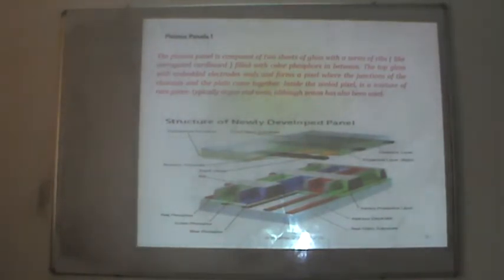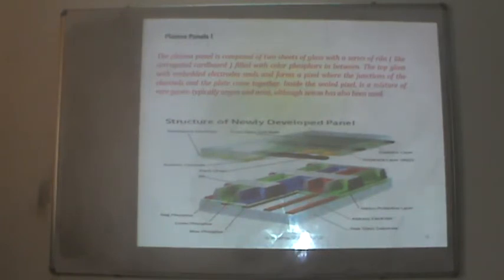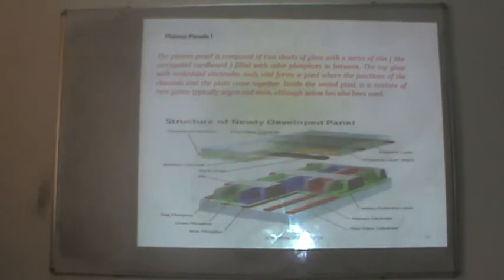The plasma panel display is composed of two sheets of glass with a series of ribs filled with color phosphors in between. The top glass with embedded electrodes seals and forms a pixel at the junction of the magnetic channels. Inside the sealed pixel is a mixture of rare gases — typically argon, neon or xenon.